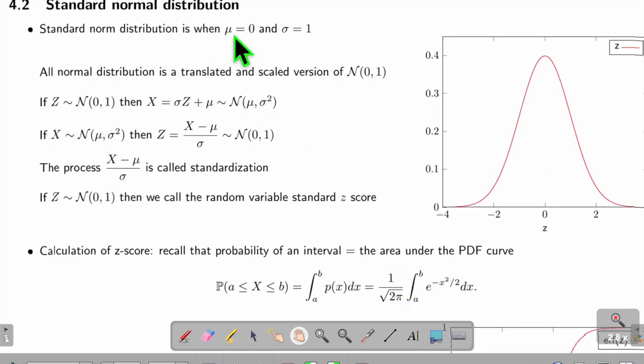When μ = 0 and σ = 1, we call it standard normal distribution, written as Z. If Z is standard normal, then X = σZ + μ gives the general normal distribution N(μ, σ²). Similarly, if X ~ N(μ, σ²), then (X - μ)/σ is a standard z-score.